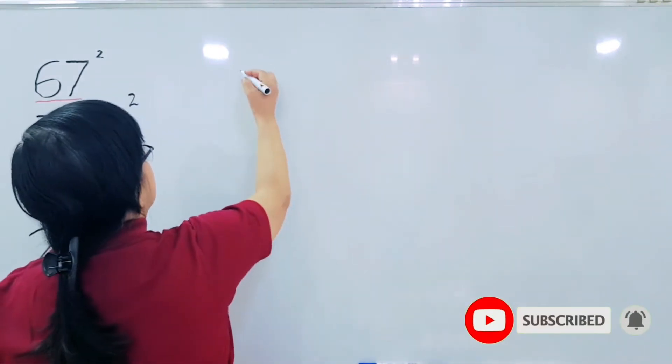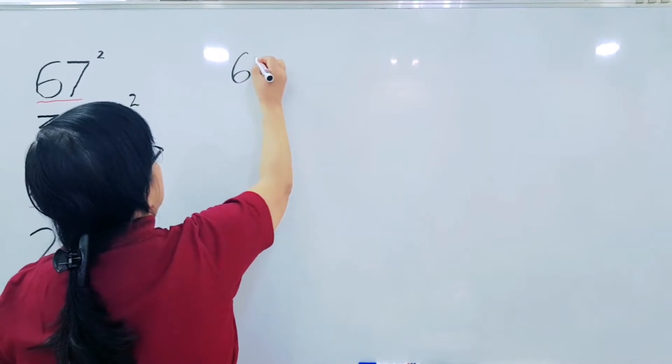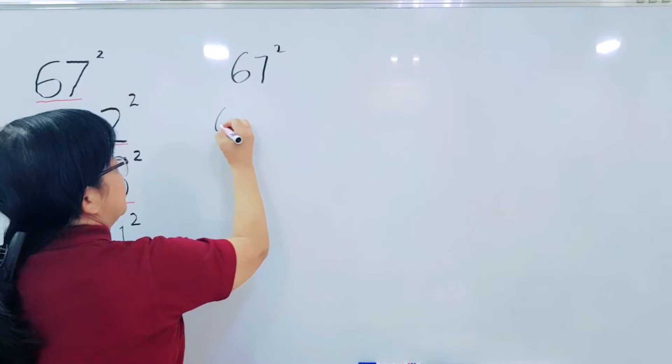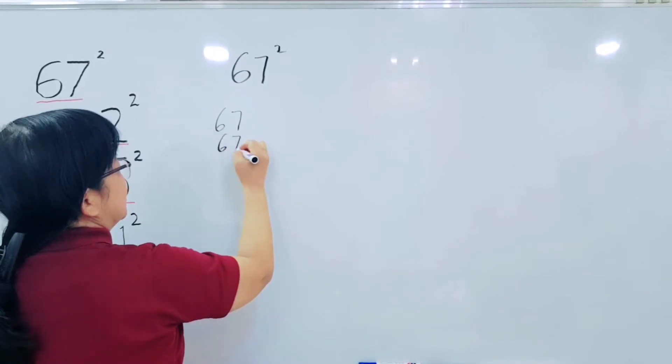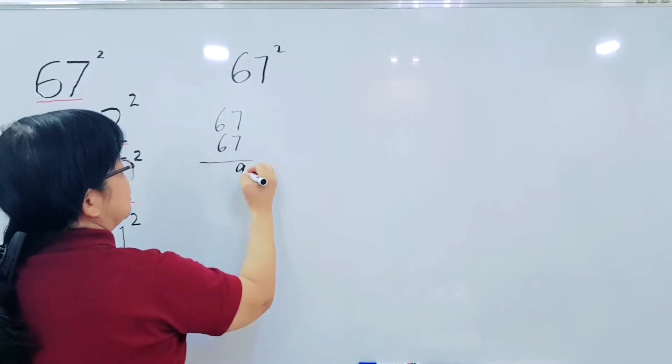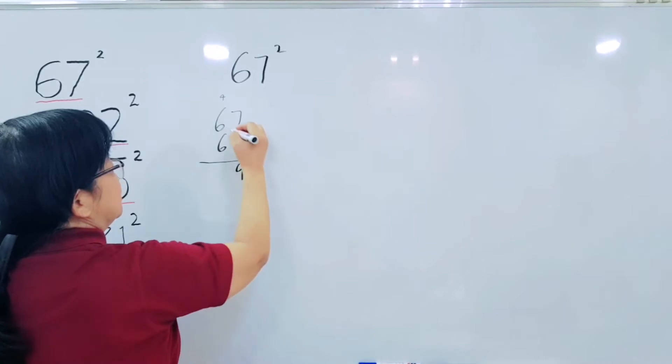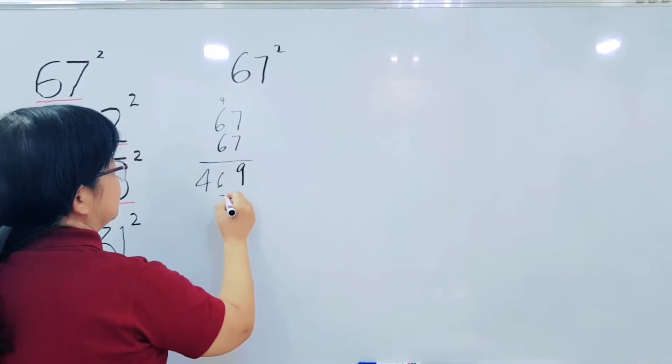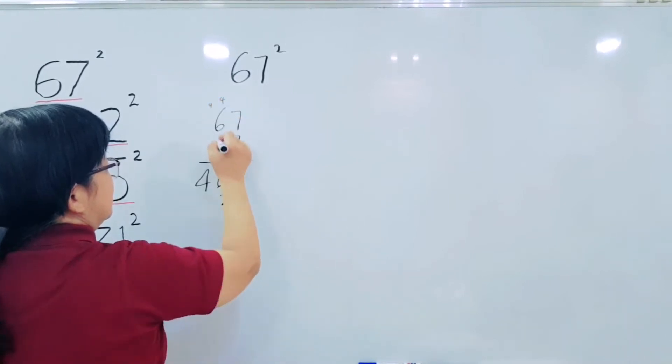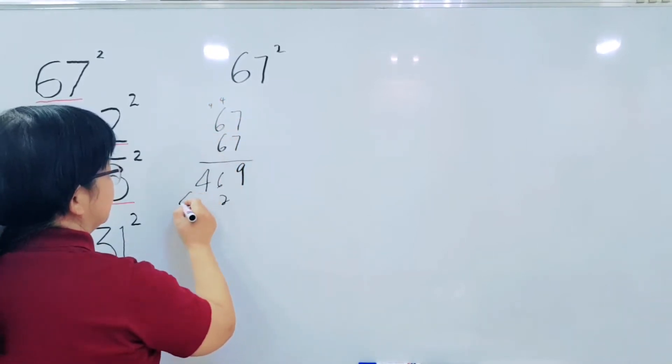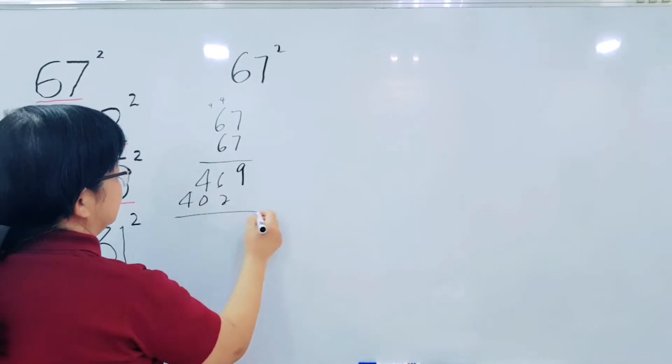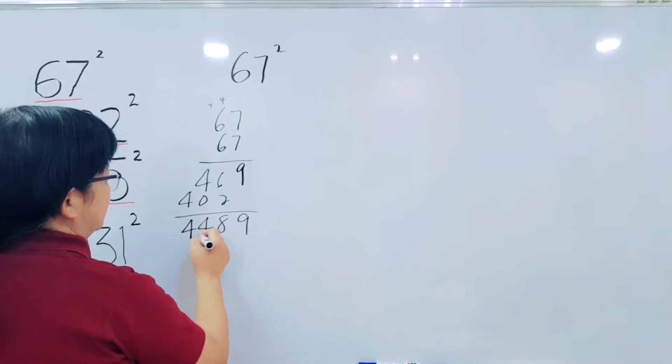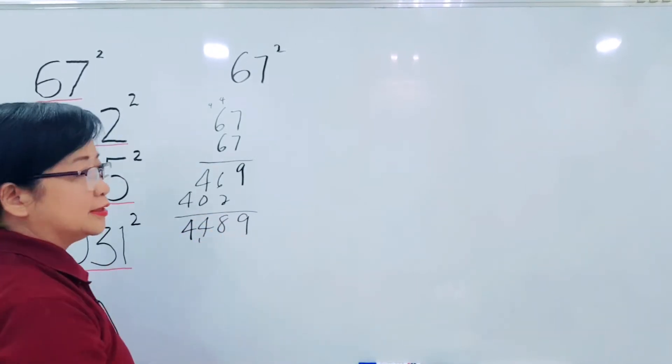Our first example: we have 67 squared. In the usual way, the one we learned from the school is like this. 7 times 7 is equal to 49 carry 4. 7 times 2 is 42 plus 4 is equal to 46. 6 times 7 is equal to 42 carry 4. 36 plus 4 is equal to 40. Therefore, the total is 4,489.